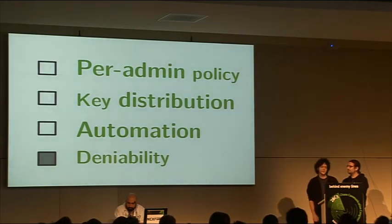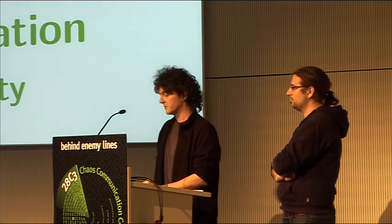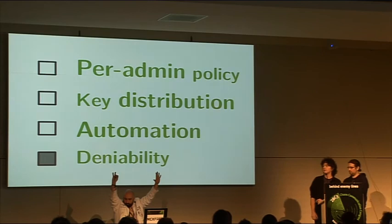Another item on our checklist is deniability. We want to provide at least some form of deniability. This is achieved by storing all the metadata we have about the key in encrypted format. When you look at an Arbor key, you don't know which server there is a key for, and you don't even know how many keys are in it because we apply random padding. So you can always deny that you can even access a disk.